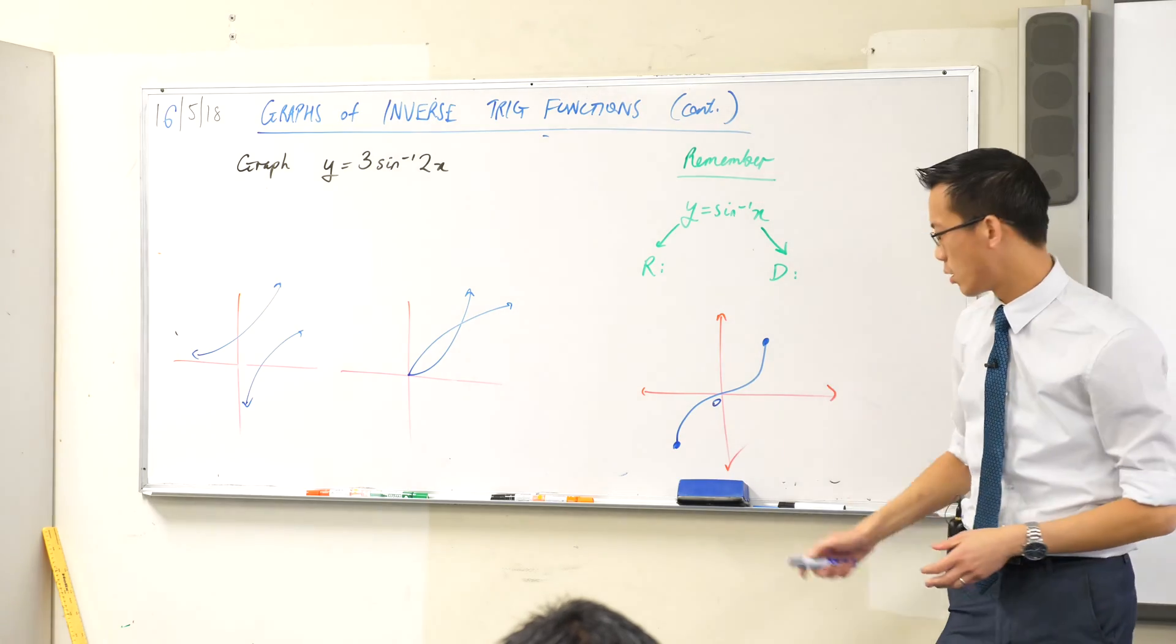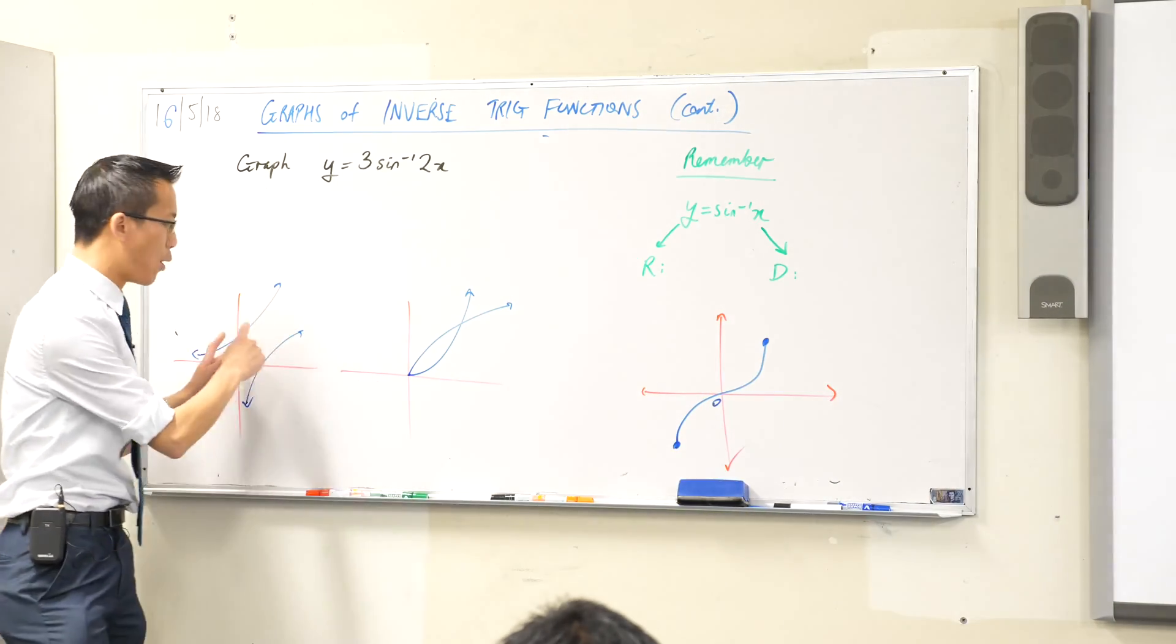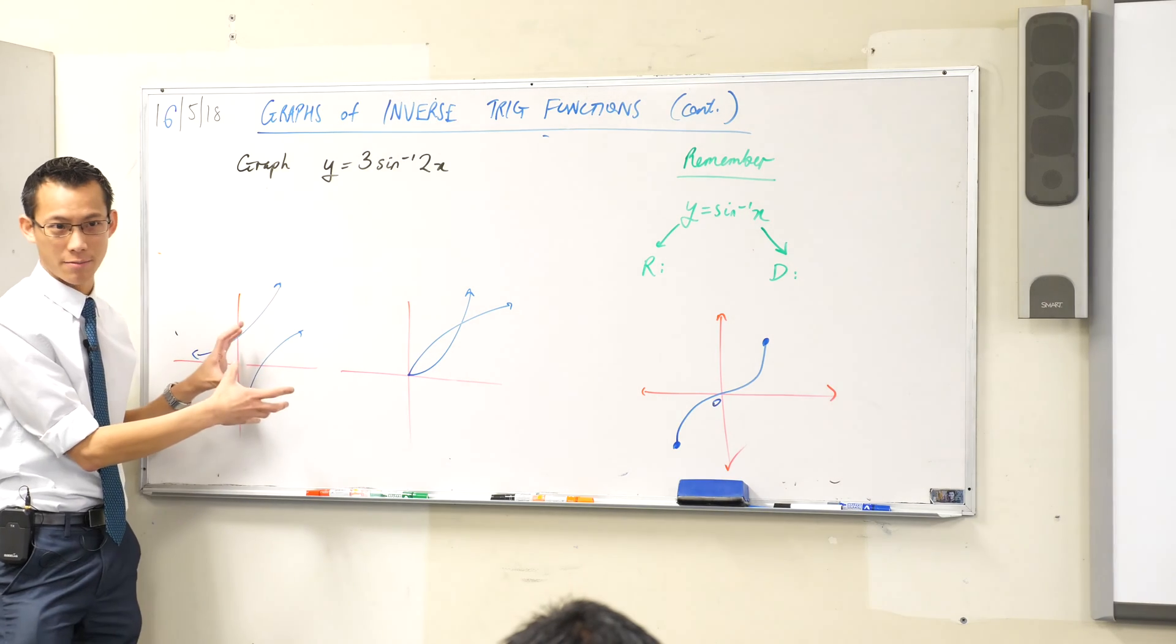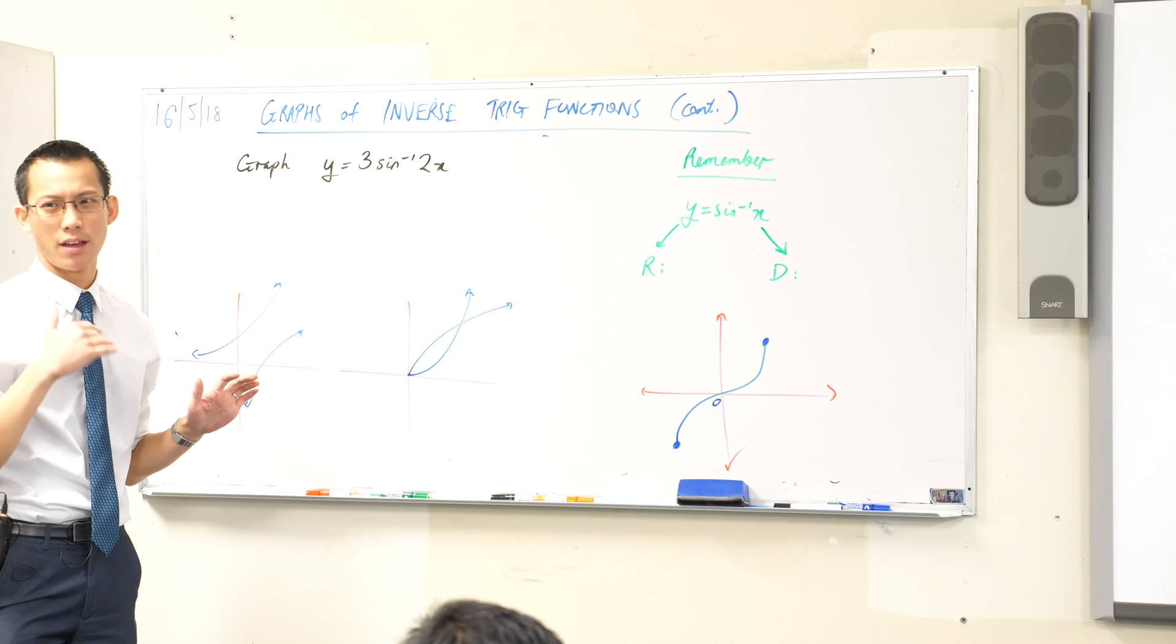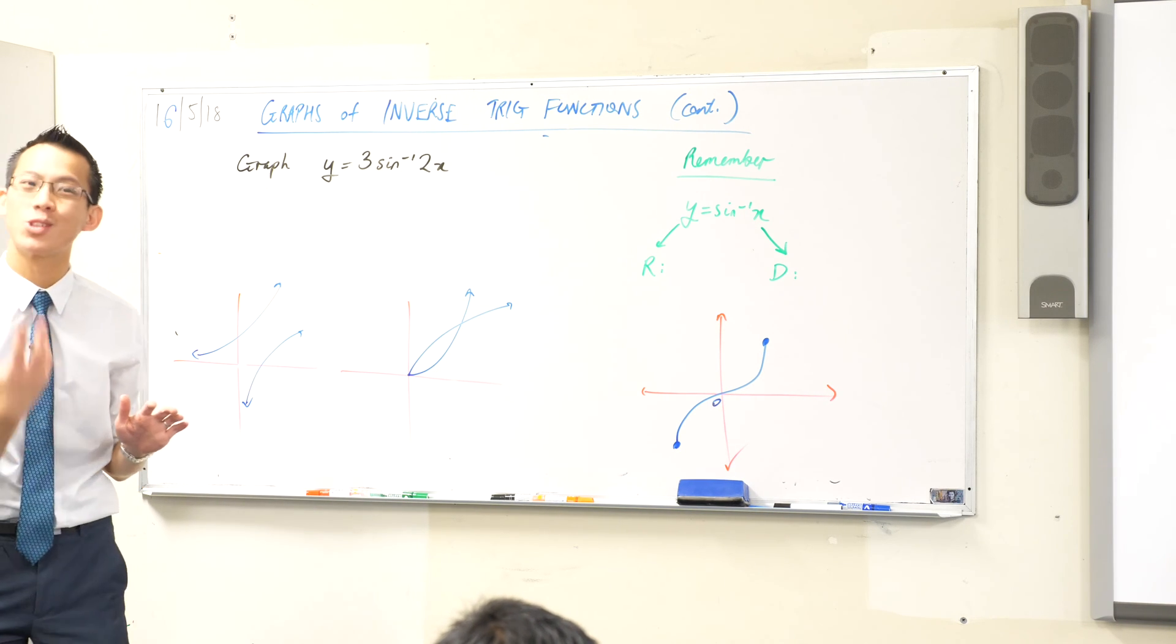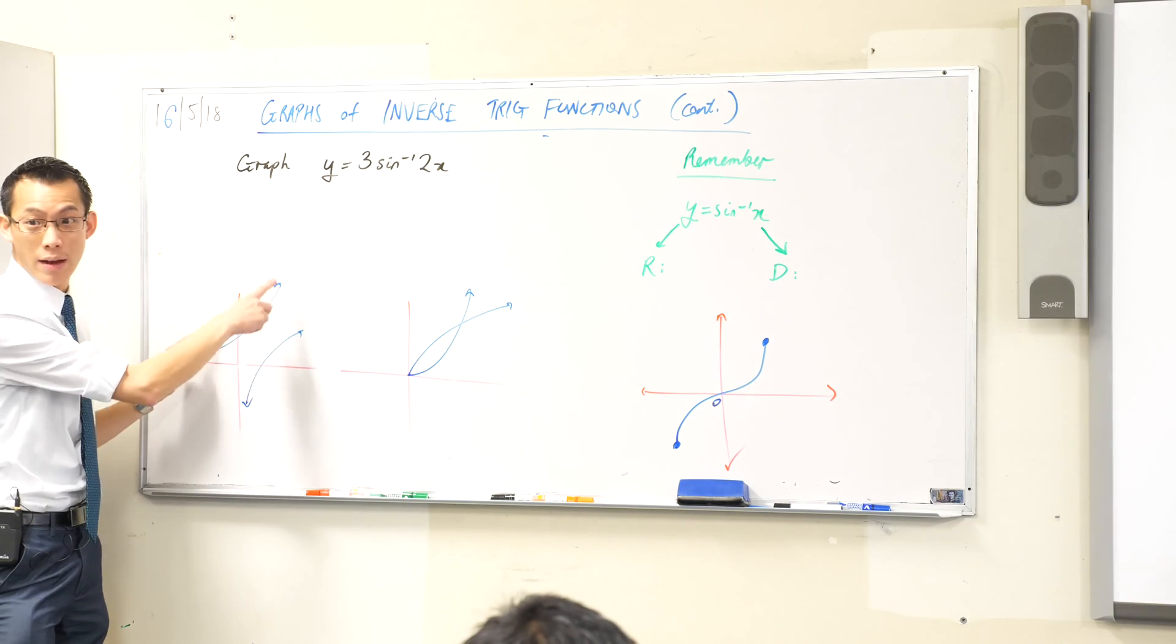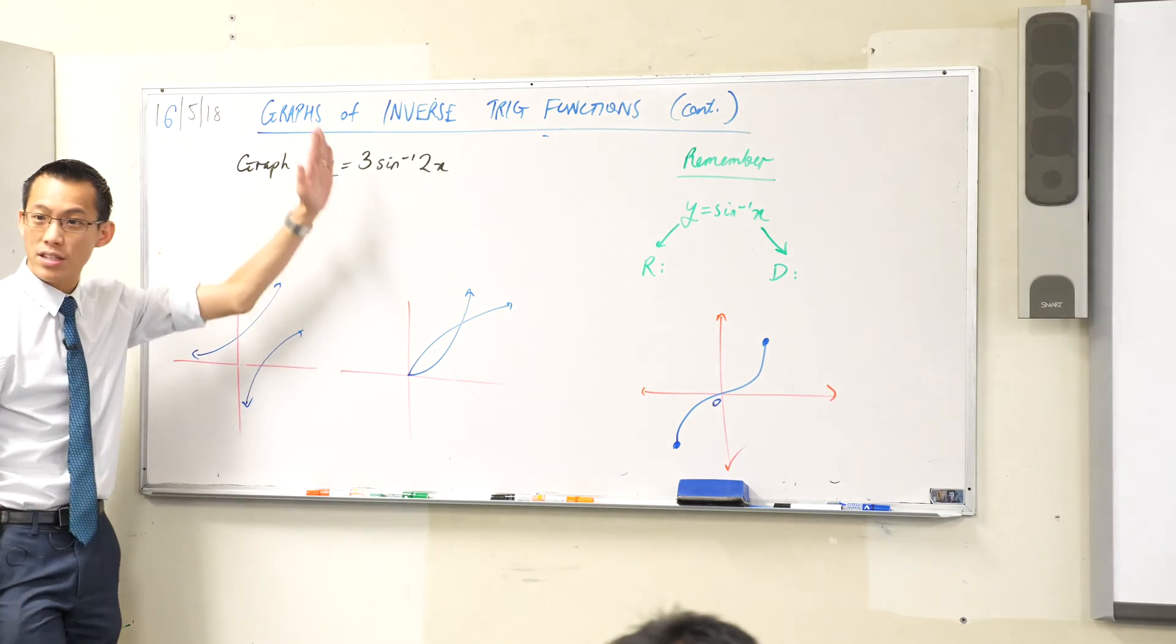Now, I want to call back some of the language that we developed way back in the beginning of calculus. Both of these functions are what we call, throw some language at you, these are both monotonically increasing. What that means is, what happens when someone is monotone? It means they are talking in the same way all the time, their voice never goes up, it never goes down, that's what monotone means. Monotonically increasing means it's always going up. e to the x never turns around, x squared in this domain never turns around. So it's always going up.